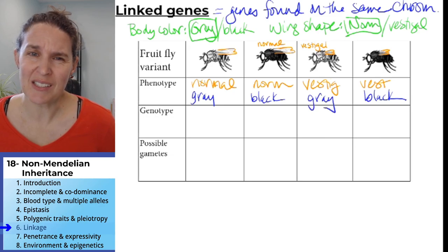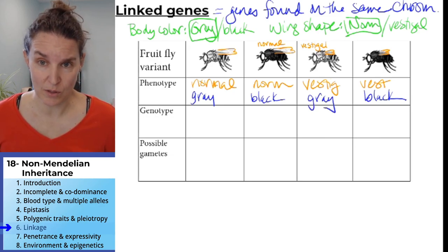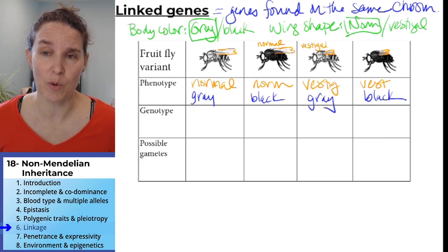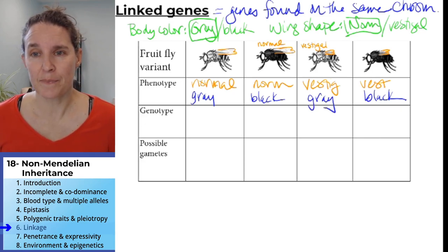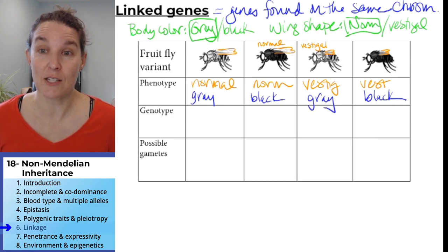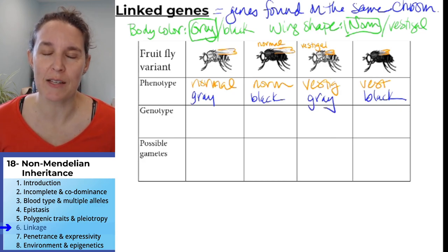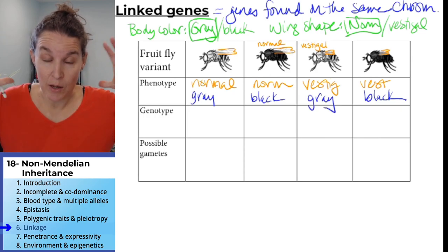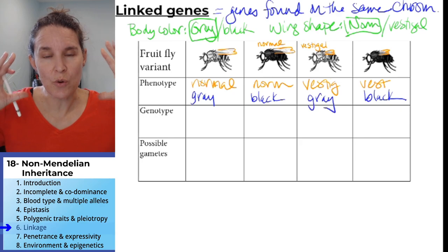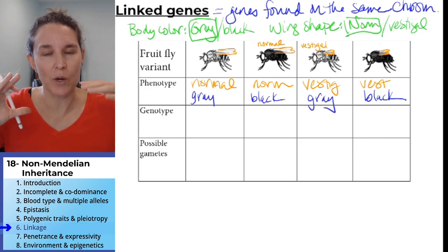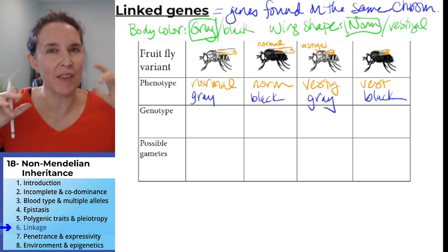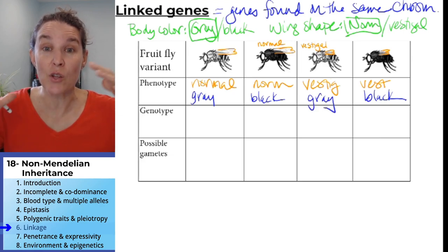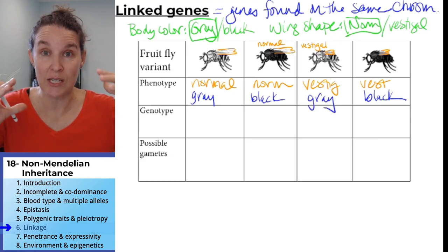Vestigial wings are not going to be super successful in the world, so vestigial wings are something that scientists have propagated in order to study genetics. Now we're going to do two things at the same time: look at all the genotypes and think about the possible gametes — all of this assuming the genes are not linked, even though in reality these genes are linked.